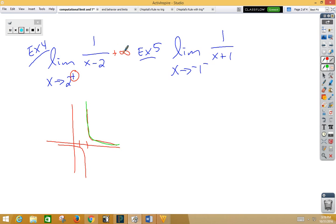Here, 1 over x plus 1 is the same shape shifted to the left 1, but it's still going to be the same shape. As we approach from the left side, we get negative infinity.